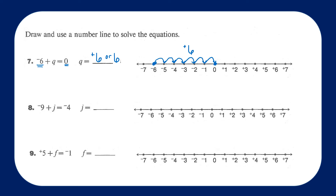Question number 9: I'm going to start at negative 9 and I want to land on negative 4 — so negative 9 to negative 4. I'm going to move positively 1, 2, 3, 4, 5 units, so that will be a positive 5 or just 5. Negative 9 plus positive 5 equals negative 4.